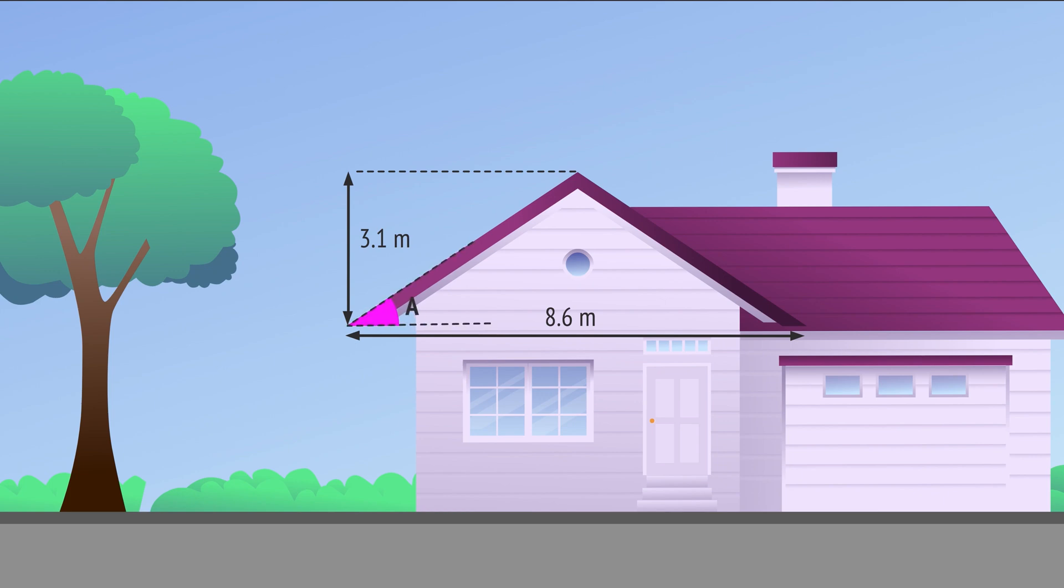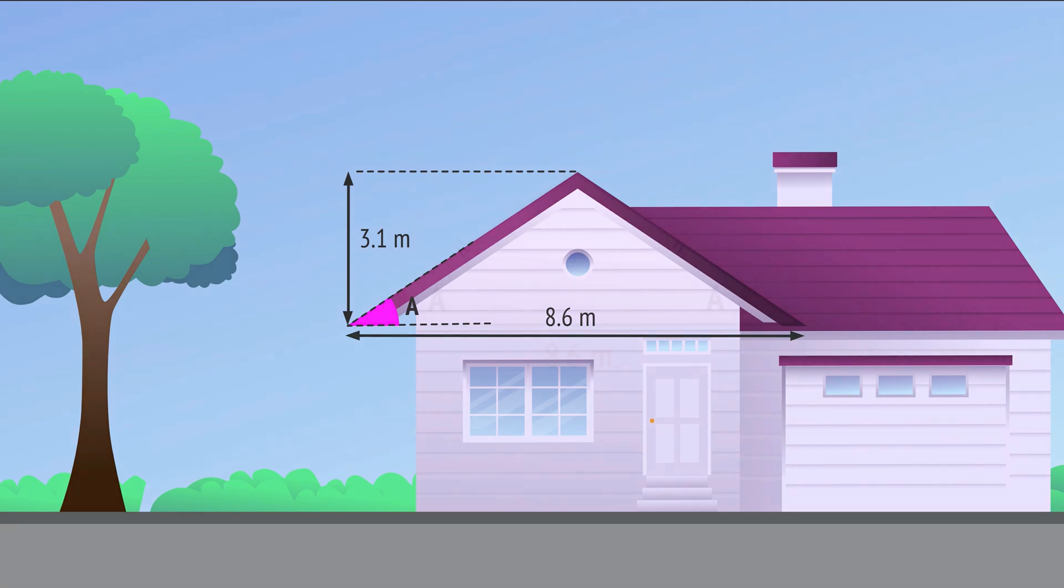So, how can we calculate A, the angle of inclination of this roof? Since the incline is the same on both sides, we can draw an isosceles triangle to represent the roof. We can then break this up into two right-angled triangles.